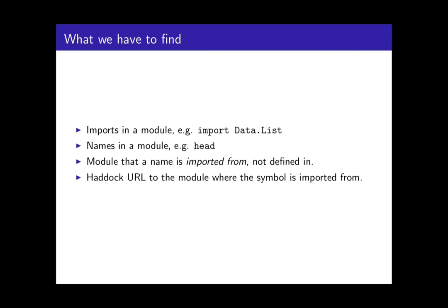Using the API you can quite easily ask for a few things, like tell me the imports of the module, and it will tell you things like you have import data.list. You can ask for the names in there. If you just have a string like H-E-A-D, you need to map that to something that corresponds to something in the GHC syntax tree. You want to find out where it's imported from, not where it's defined, because where it's defined could be ghc.list, while where it's imported from could be something else. Then you've got to get a nice URL.